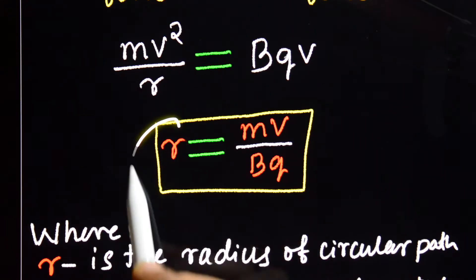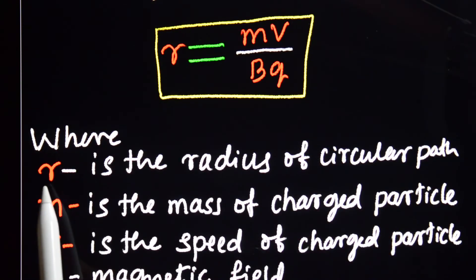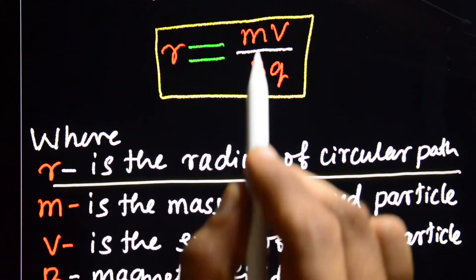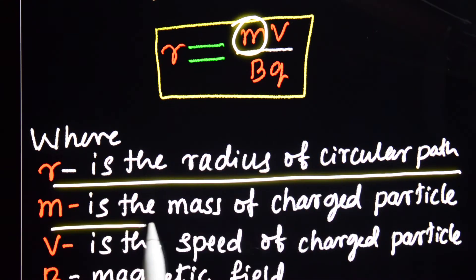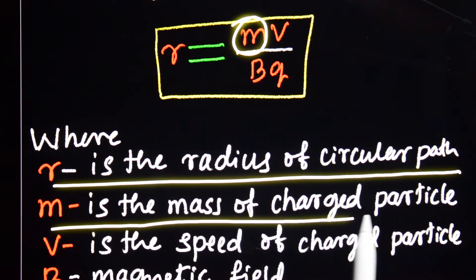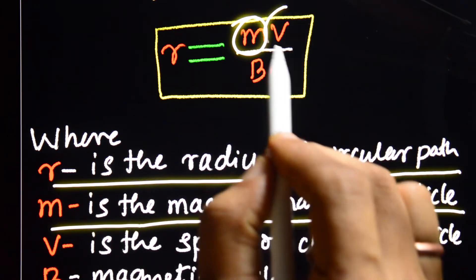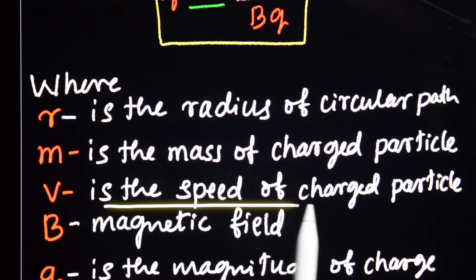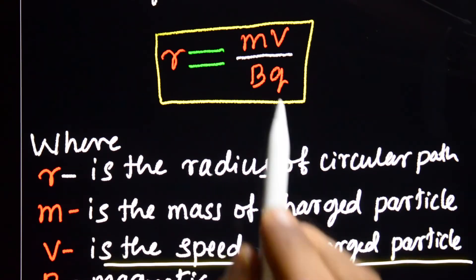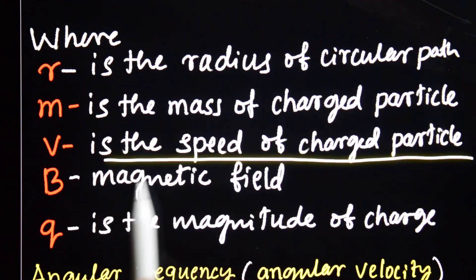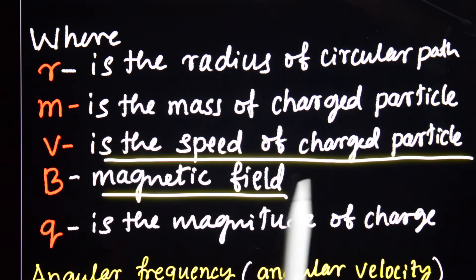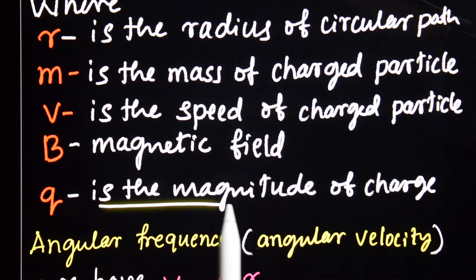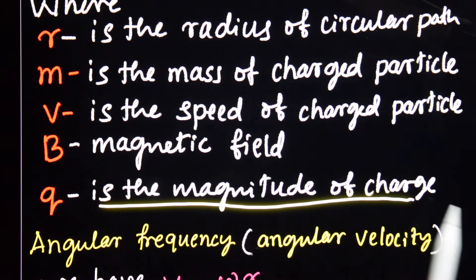R is the radius of the circular path. M is the mass of the charged particle. V is the speed of the charged particle. B is the magnetic field. Q is the magnitude of the charge.